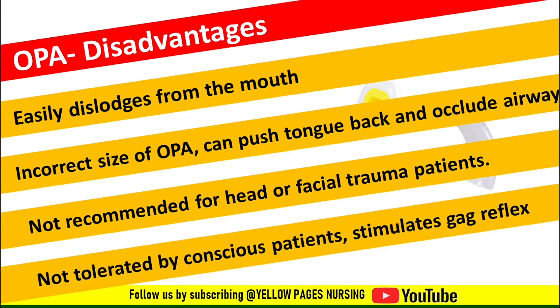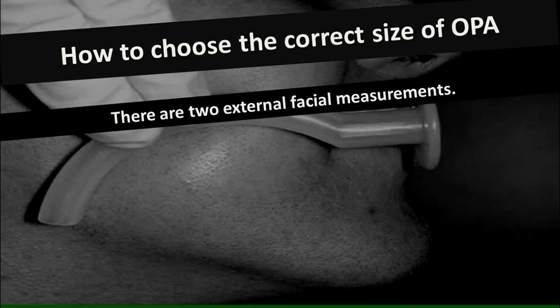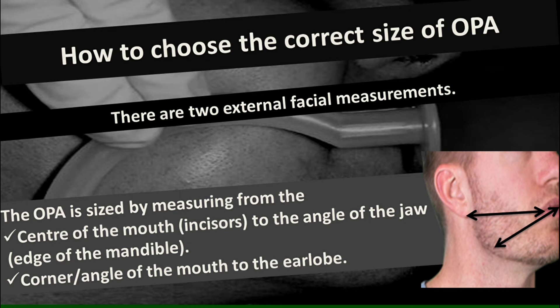To choose the correct size of OPA, there are two external facial measurements. First, from the center of the mouth or center of the lips (inside the teeth) to the angle of the jaw — the edge of the mandible. Second, from the corner or angle of the mouth to the earlobe. Correct sizing is very important, as an incorrect size can lead to complications.